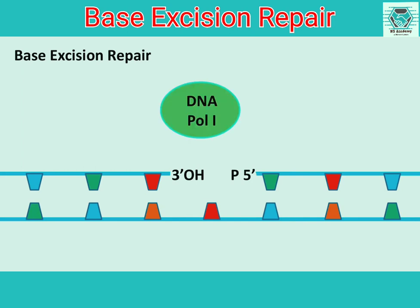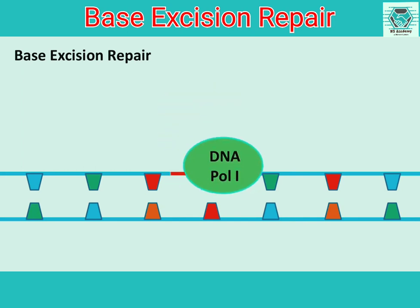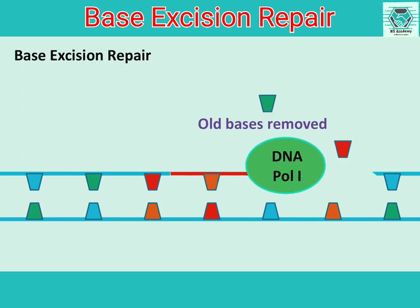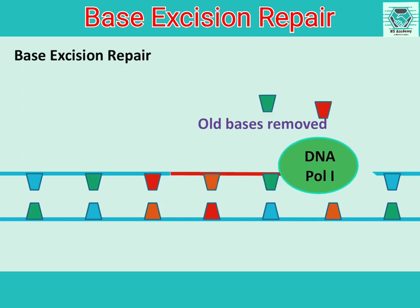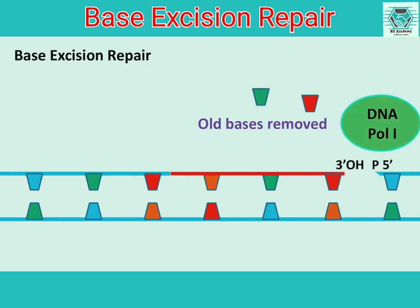DNA polymerase then identifies the 3'OH and adds correct bases in the 5' to 3' direction. During this step, DNA polymerase also carries out 5' to 3' exonuclease activity to remove the old bases.